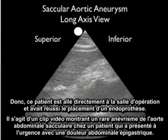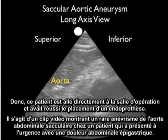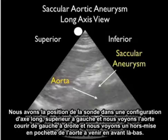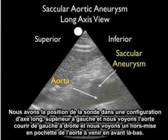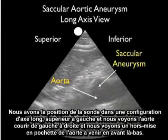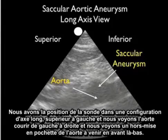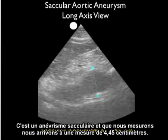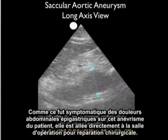This is a rare video clip showing a saccular abdominal aortic aneurysm in a patient who presented to the ED with epigastric abdominal pain. The probe is positioned in a long axis configuration, and we see the aorta running from left to right with an outpouching coming anteriorly — that's a saccular aneurysm — measuring 4.45 centimeters. As the patient was symptomatic with epigastric abdominal pain over this aneurysm, she went directly to the operating room for operative repair.